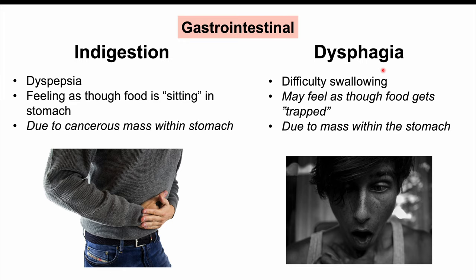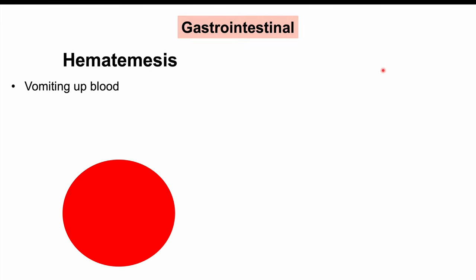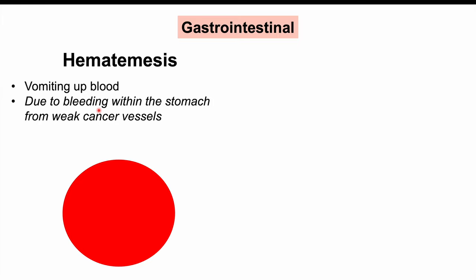We can also see hematemesis, which is vomiting up blood. This is due to bleeding within the stomach from weak cancerous blood vessels — the vessels the cancer uses for nourishment are weaker and can break, causing bleeding in the stomach. The patient can feel nauseous, vomit, and vomit up blood. Later in the disease, hematemesis can become increasingly severe with more bleeding from the cancer's vessels.